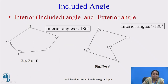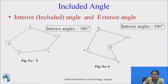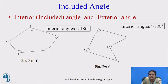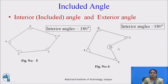Included angle means the angle made by two survey lines. If you see figure number 5, angles A, B, C, D, and E are the included angles — these are the angles between survey lines. For example, angle A is made by survey lines AB and AE. The included angles can be less than 180 degrees or greater than 180 degrees. In figure number 5, all interior angles are less than 180 degrees. In figure number 6, except angle D, all included angles are less than 180 degrees, and angle D is greater than 180 degrees.